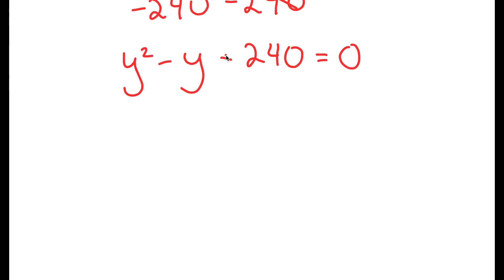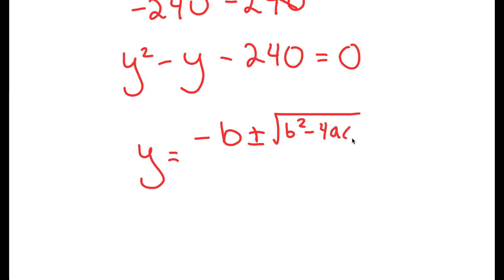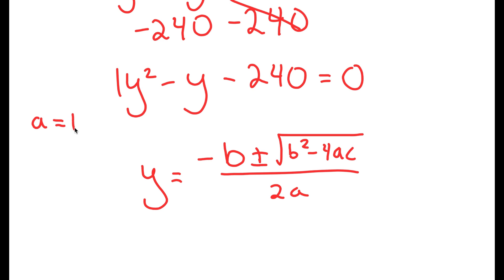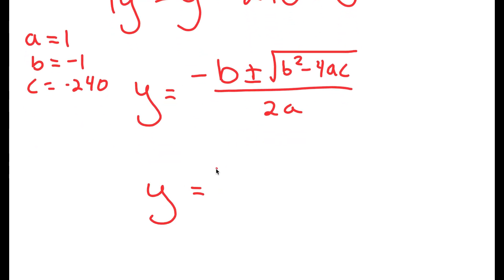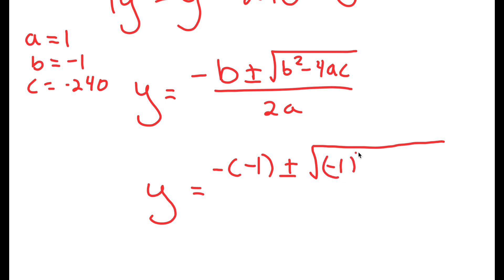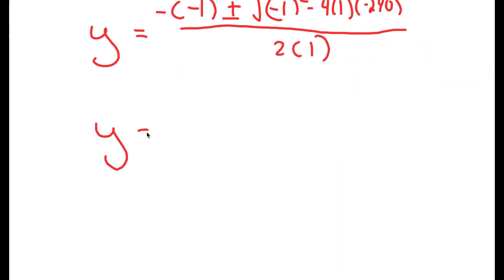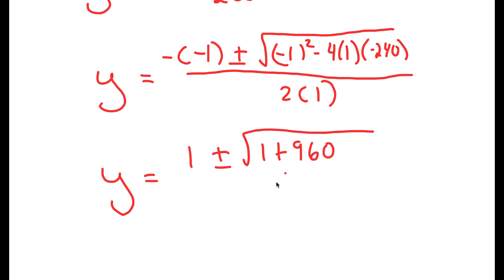To find the solutions of this quadratic equation, I can use the quadratic formula: negative b plus or minus the square root of b squared minus 4ac, all over 2a. In this case, a is 1, b is negative 1, and c is negative 240. So I get y equals negative of negative 1, plus or minus the square root of negative 1 squared minus 4 times 1 times negative 240, all over 2 times 1.